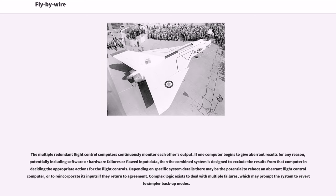Three or four separate data buses connect computers with each control surface. The multiple redundant flight control computers continuously monitor each other's output. If one computer begins to give aberrant results due to software or hardware failures or flawed input data, the combined system is designed to exclude the results from that computer. Depending on specific system details, there may be potential to reboot an aberrant computer or reincorporate its inputs if they return to agreement. Complex logic exists to deal with multiple failures, which may prompt the system to revert to simpler backup modes.